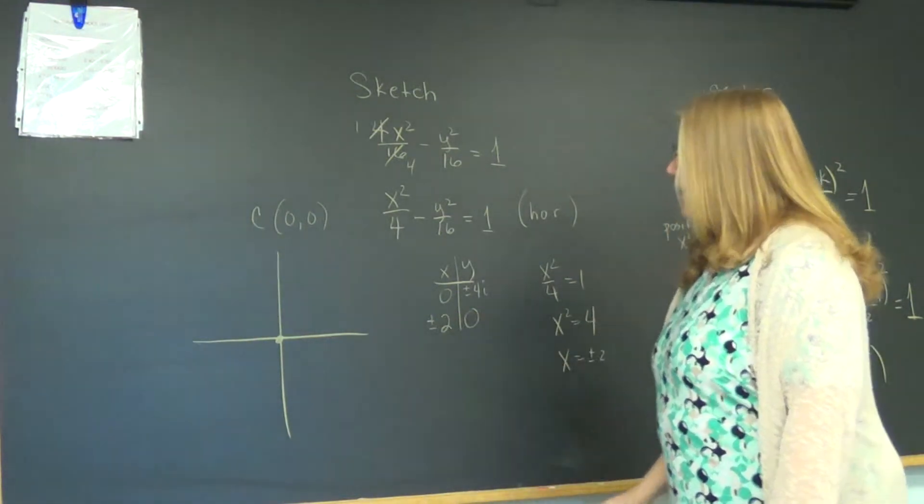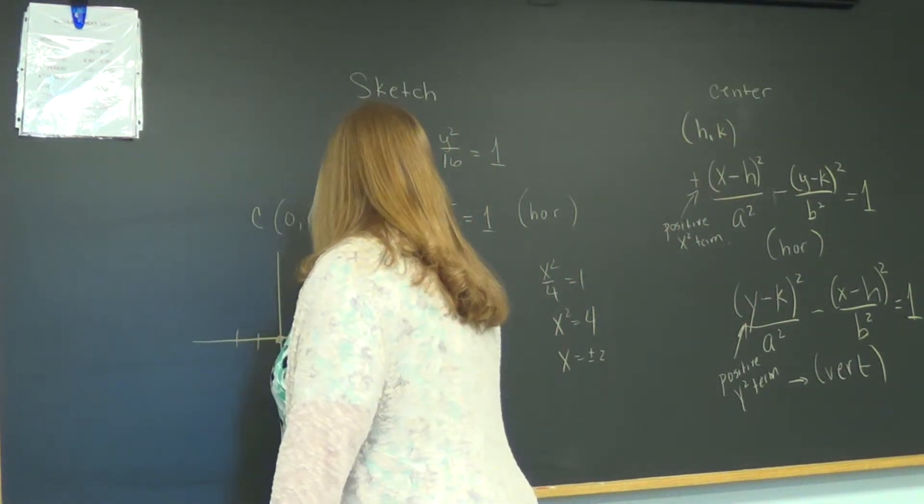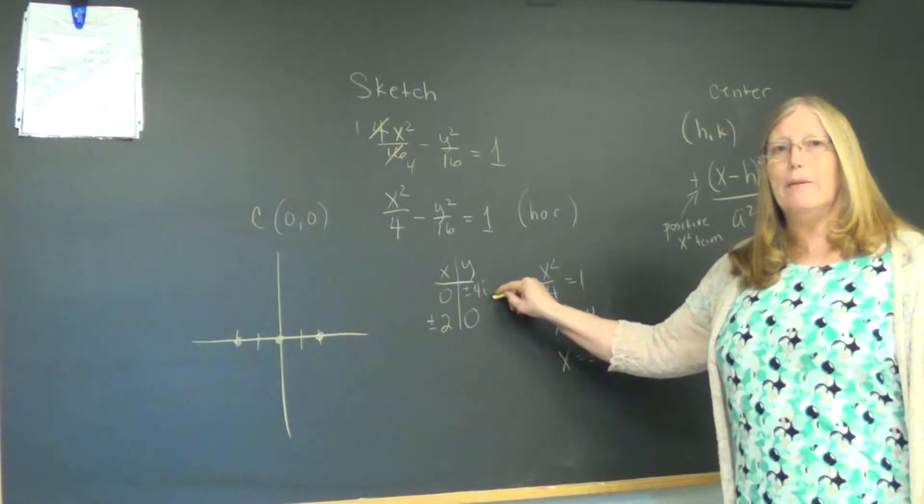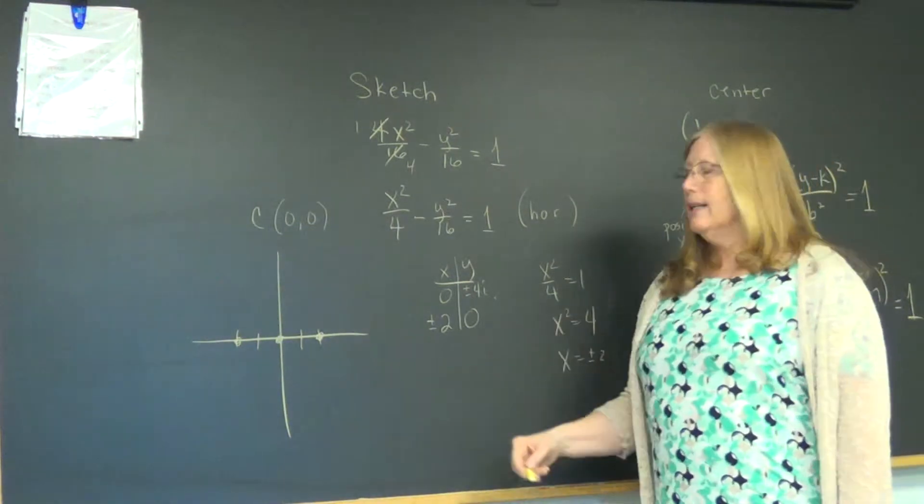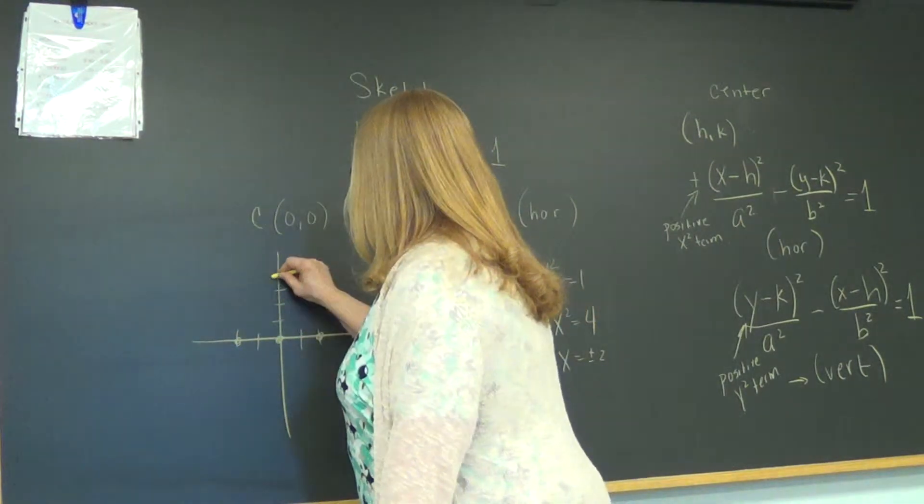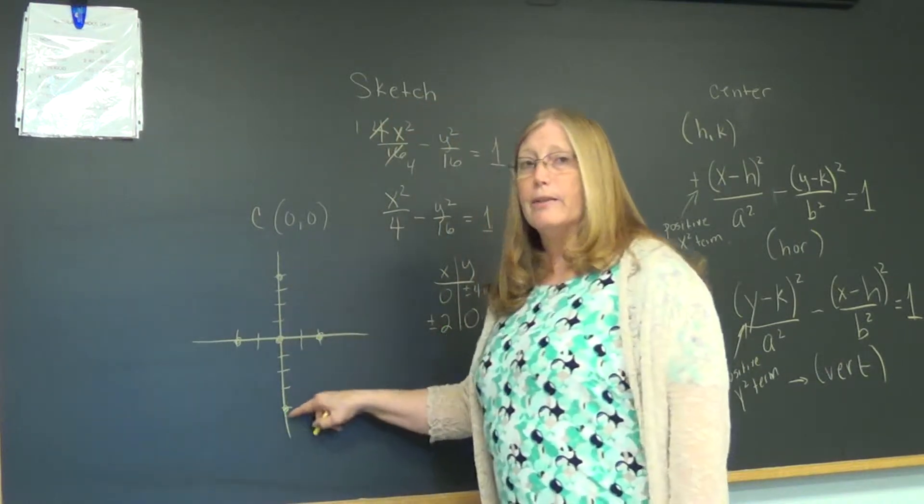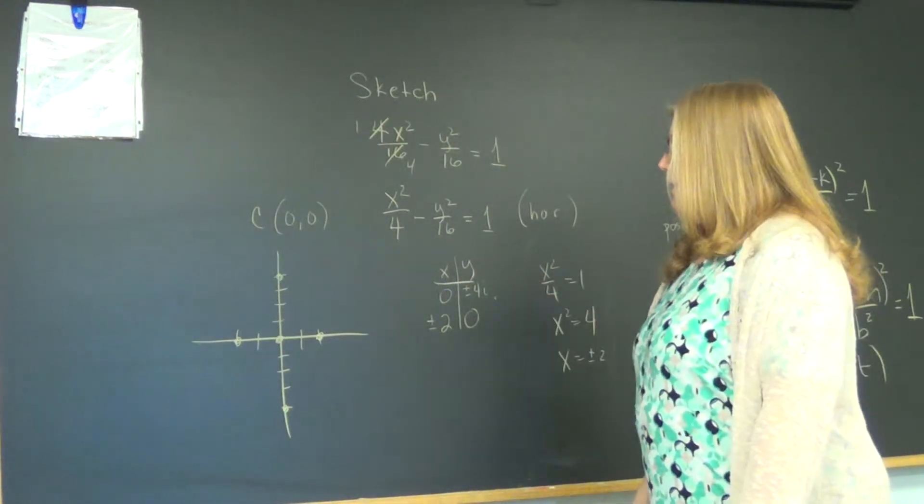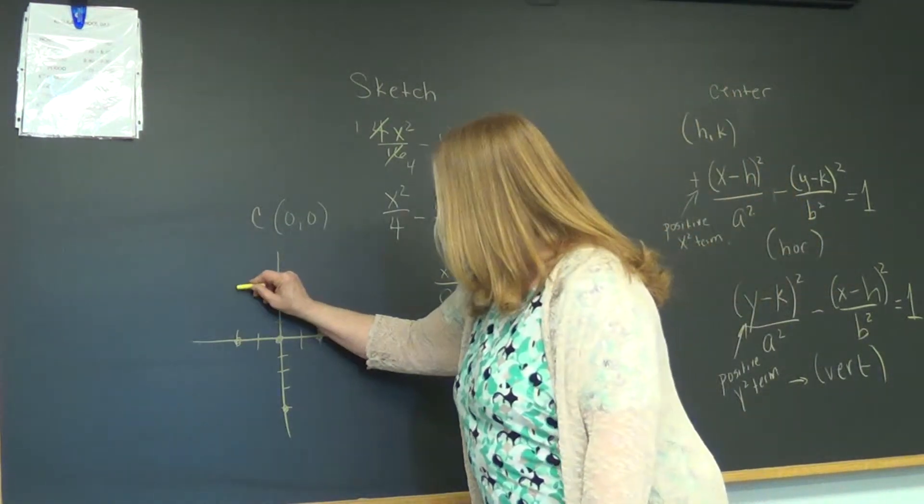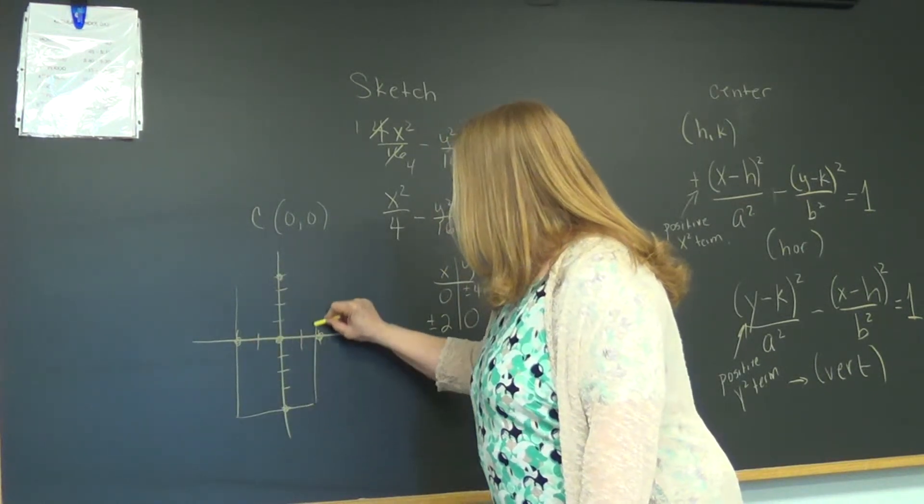So I can graph plus or minus 2. I would like to be able to graph plus or minus 4i, but i is imaginary and this is the real plane. So I am going to graph just plus or minus 4, zero plus or minus 4, and I'll speak about those two points because they aren't really on the hyperbola. These points, the four that I just graphed, form the midpoints of a rectangular box, which I'm going to now make, the midpoints of the sides of a rectangular box.